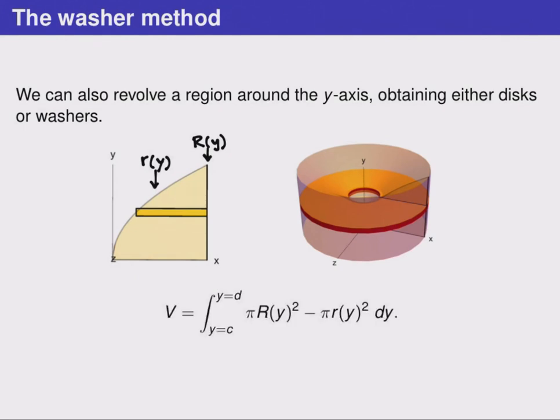Here again is that formula, and we can see that it is once again in the form the area of one cylinder minus the area of a smaller inside cylinder.